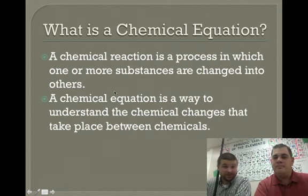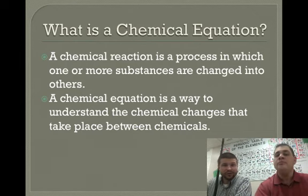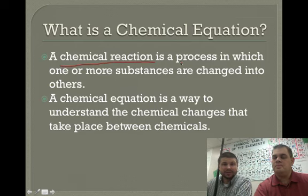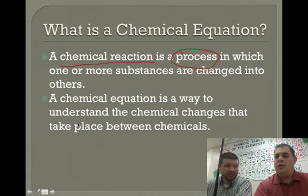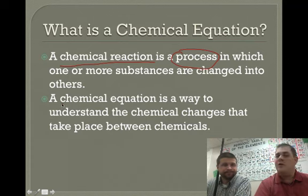So what is a chemical reaction or a chemical equation? Well, a chemical equation is just a shorthand way to represent what a chemical reaction is. So a chemical reaction is the process of one or more substances that are changed into others, and that's just represented by a chemical equation. Chemical reactions happen every day, millions of them.